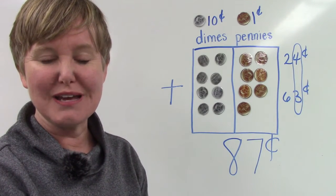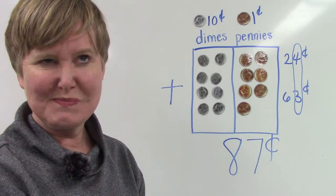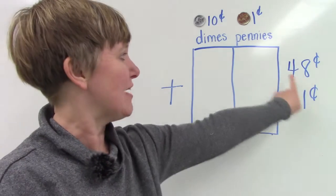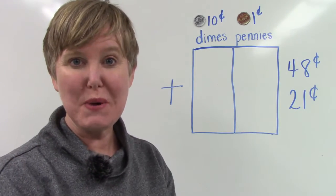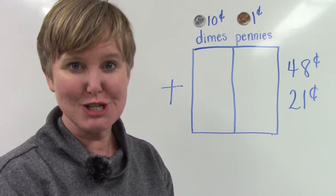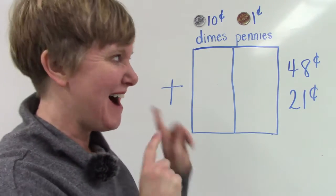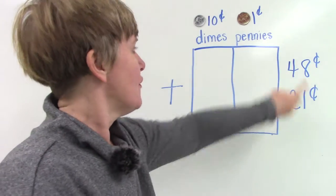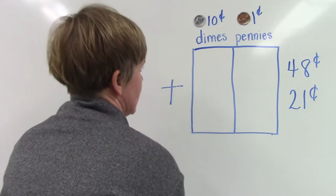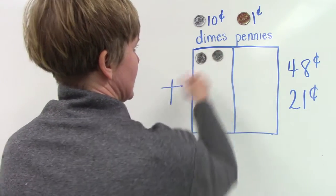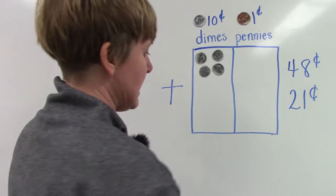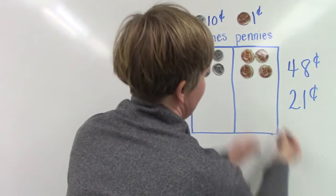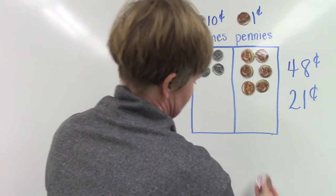Well let's try another question. This time we are going to add 48 plus 21 and we're going to use dimes and pennies to do that. While I put them on the board I want you to get those dimes and pennies as well. For 48 I would need four dimes: 10, 20, 30, 40, and eight pennies: 1, 2, 3, 4, 5, 6, 7, 8.